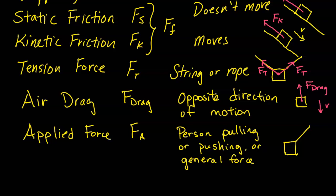Lastly we have applied force, symbol Fa. This is when a person is pulling or pushing, or a general force. Perhaps in the problem an object just has an arrow with F and you don't know if it was a rope — you don't know what the force is. In that case we can label it as Fa, applied force. It's a general, non-specific force — it could be a pull or push by a person.